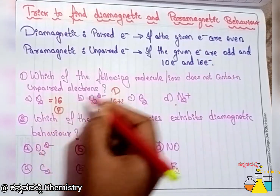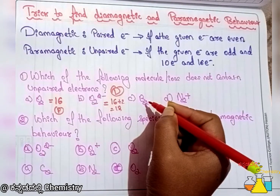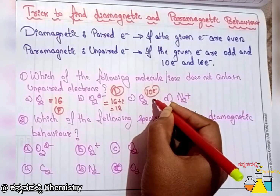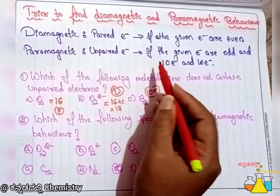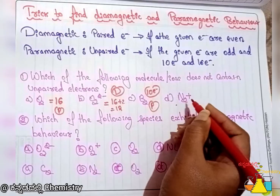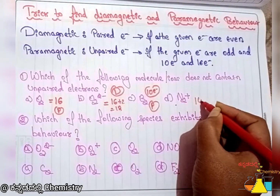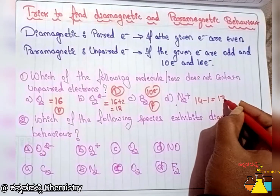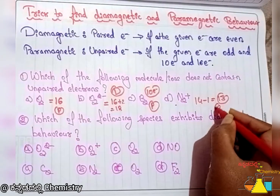For B2: atomic number of boron is 5, so 2×5 is 10 electrons. 10 is an even number normally diamagnetic, but 10 is an exceptional case — it is paramagnetic. For N2⁻: nitrogen is 7, so 2×7 is 14, minus 1 gives 13 electrons, which is odd, so it is also paramagnetic.